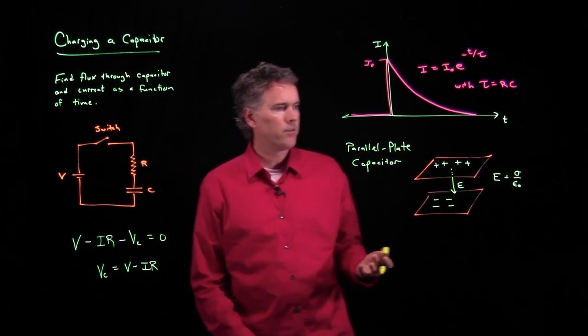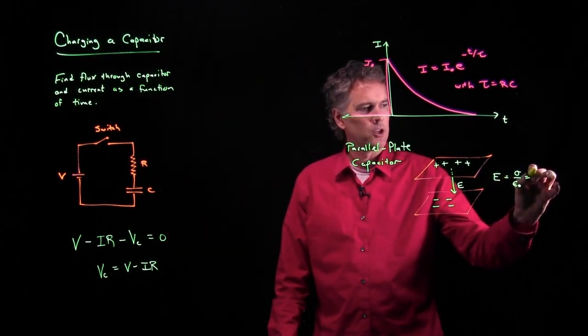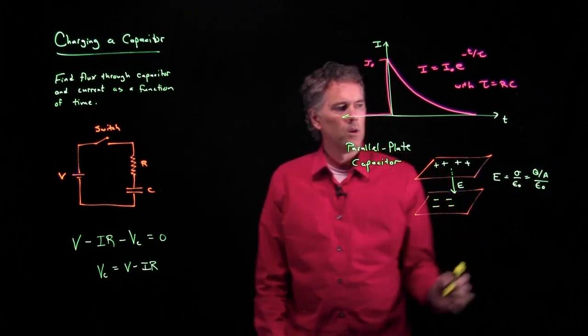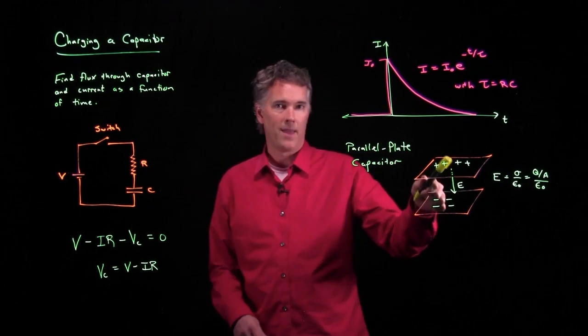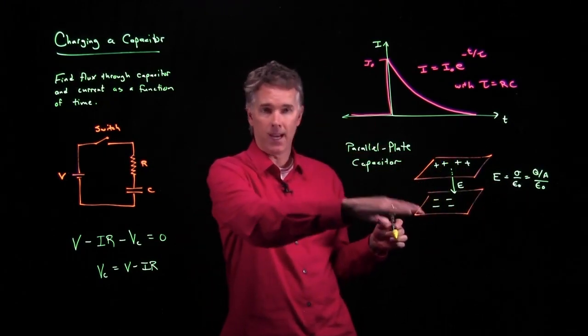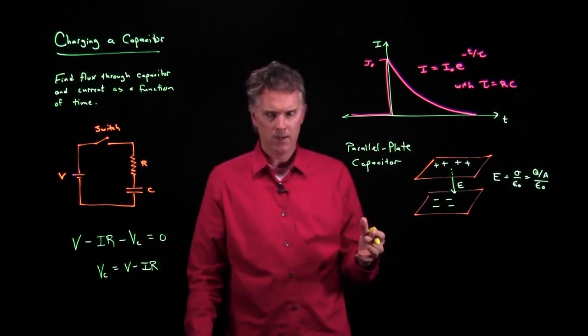That E field strength is sigma over epsilon naught. We solved Gauss's law to figure that out. But sigma is in fact Q over A. What is the charge on that top plate? That's what the Q is. There's obviously going to be negative Q on the bottom plate.